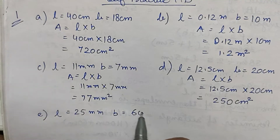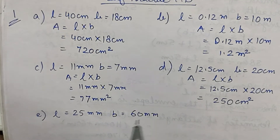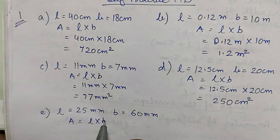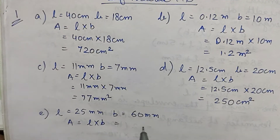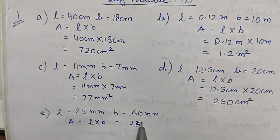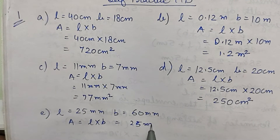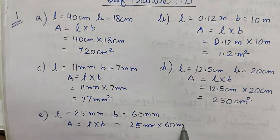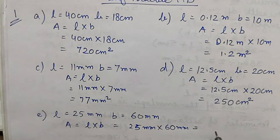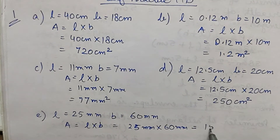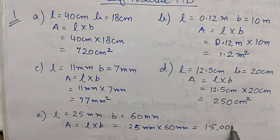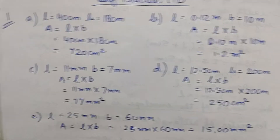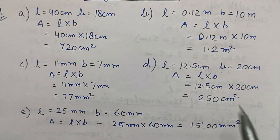Part e: length is 25 millimeter and breadth is 60 millimeter. Area is L × B, so 25 millimeter × 60 millimeter is equal to 1500 millimeter square.